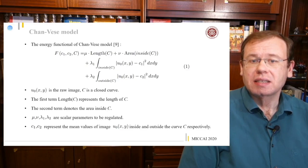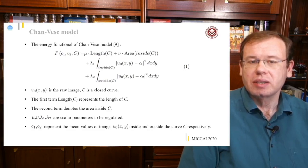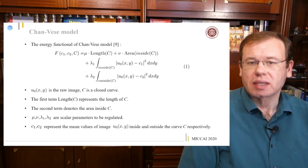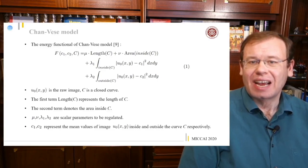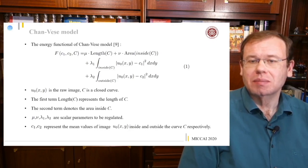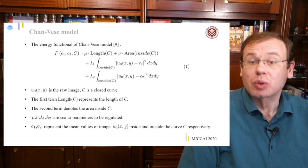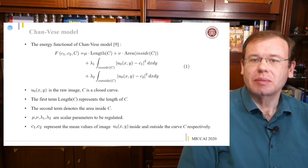They build upon the classical Chan-Vese model for image segmentation, which is built on top of an energy functional describing a curve C. The image is given by u-naught of x and y, and the complete energy is constructed as: the length of the curve, the area inside the curve, the integral over the image inside the curve minus the expected mean value inside, and another energy term measuring the distance between the image and the mean value expected outside the curve.